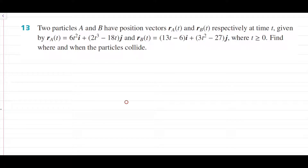Hey everyone, so today we're going to be doing Chapter 12, Vector Calculus, more specifically 12b, question 13, which is going to be on when you have two particles colliding with one another. I'm also going to throw in an intersection question because in the exam and even in your SAC, you often see collision and intersection together in one question. So without further ado, let's have a go.